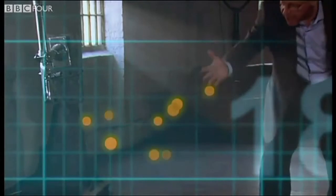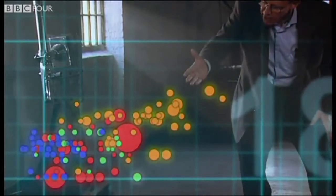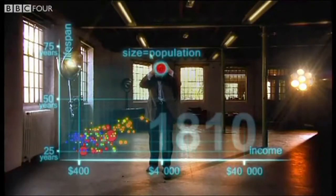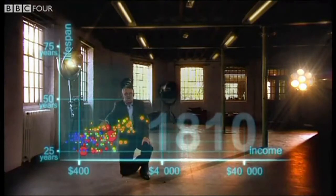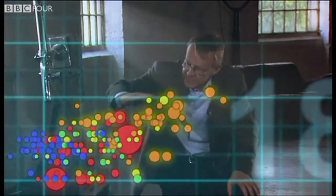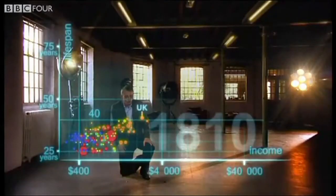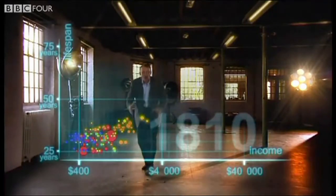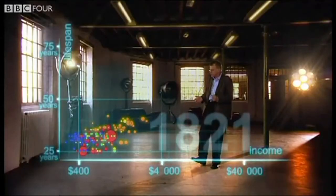Now I'm going to show you the world 200 years ago in 1810. Here come all the countries: Europe brown, Asia red, Middle East green, Africa south of Sahara blue, and the Americas yellow. The size of the country bubble shows the size of the population. In 1810 it was pretty crowded down there — all countries were sick and poor, life expectancy below 40 in all countries, and only the UK and Netherlands were slightly better off, but not much.